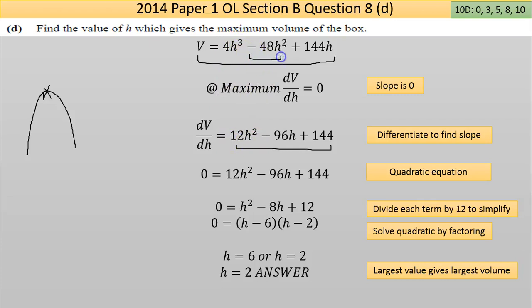Differentiate the second term here, power by number in front. So 2 times minus 48 is minus 96, take 1 from the power, 2 take away 1 is 1. If you differentiate a term with just a variable like 144h, you end up dropping the h, it actually turns to 1, you get 144. That's what I've reflected down here.